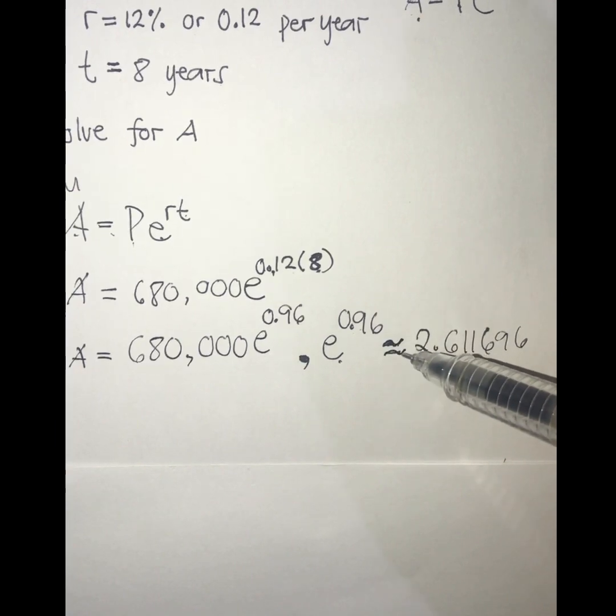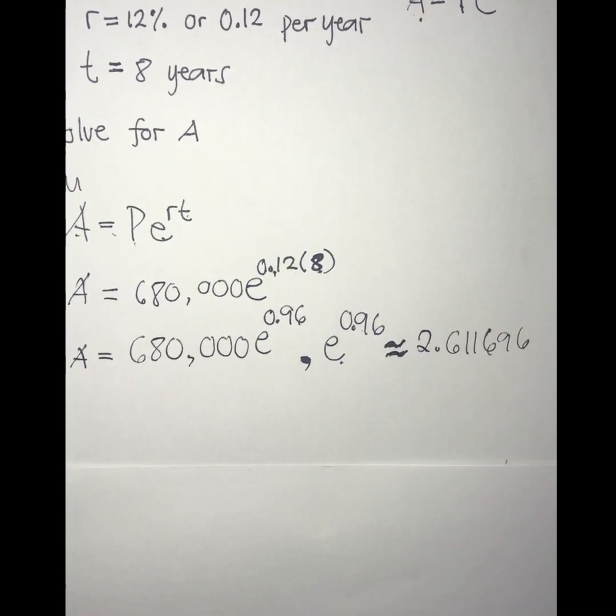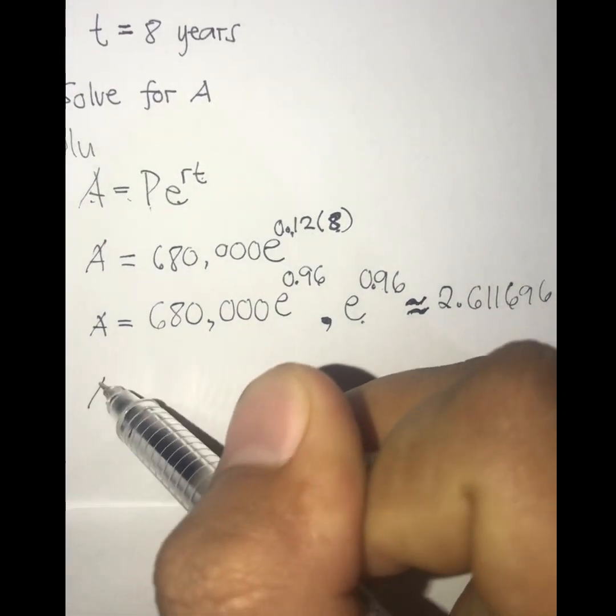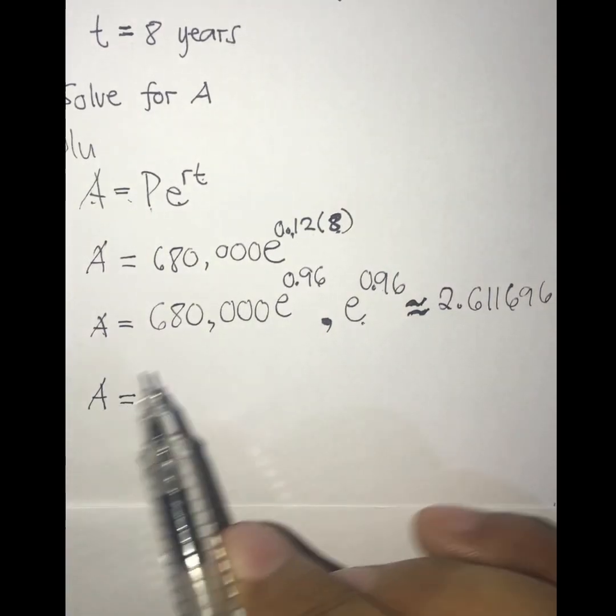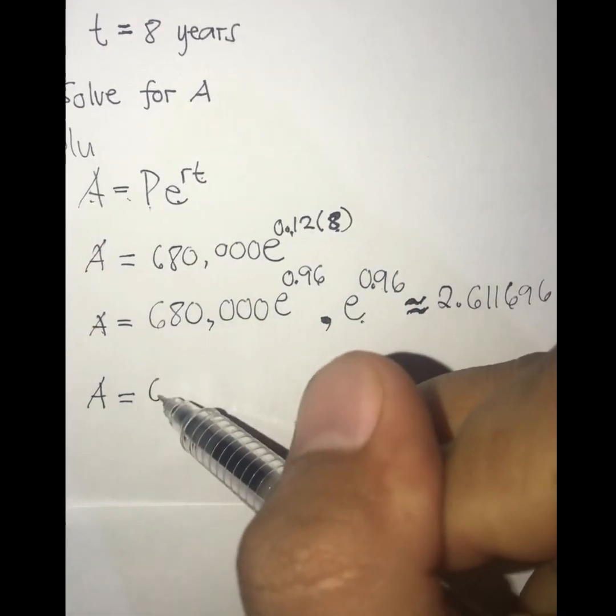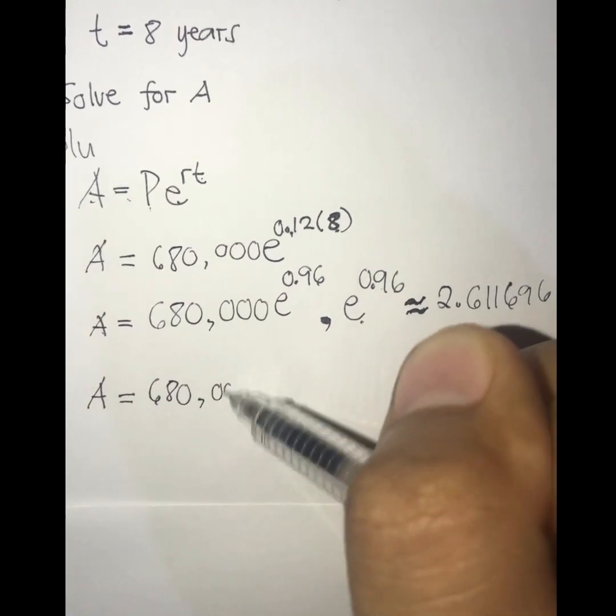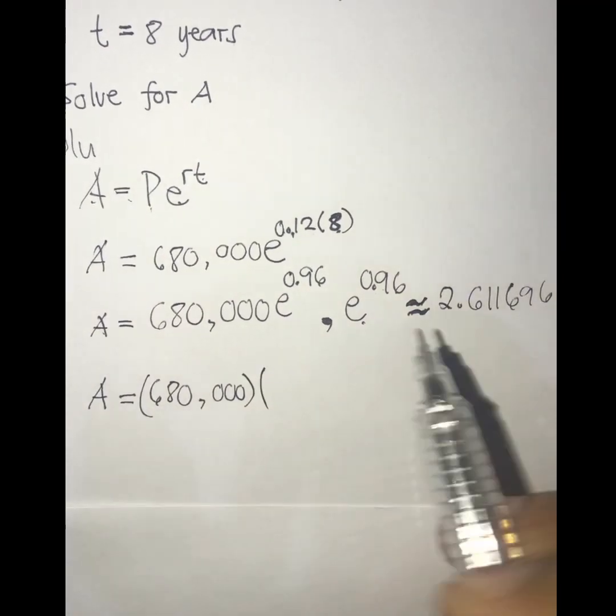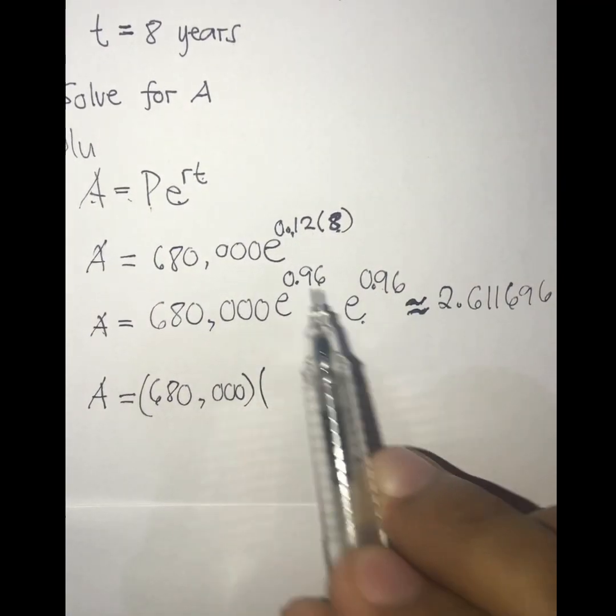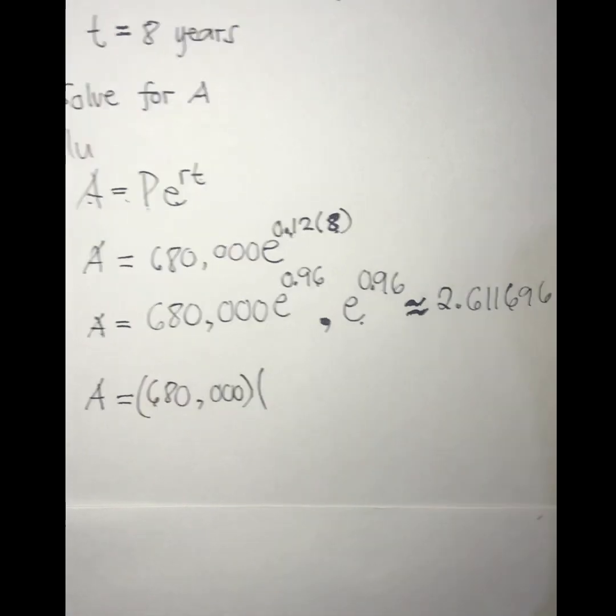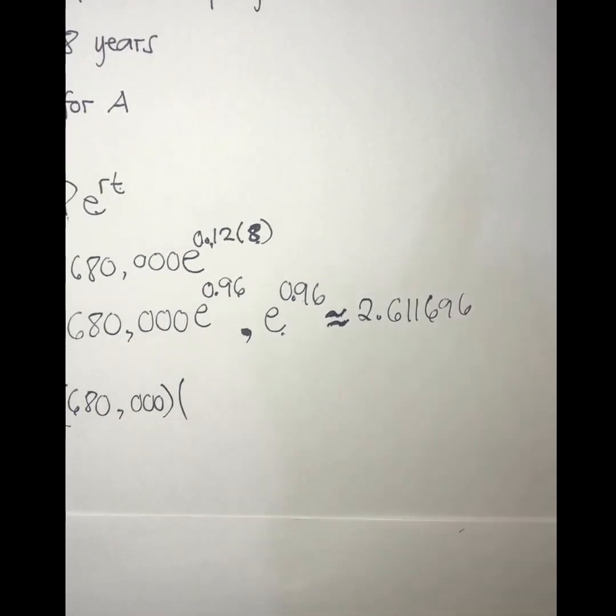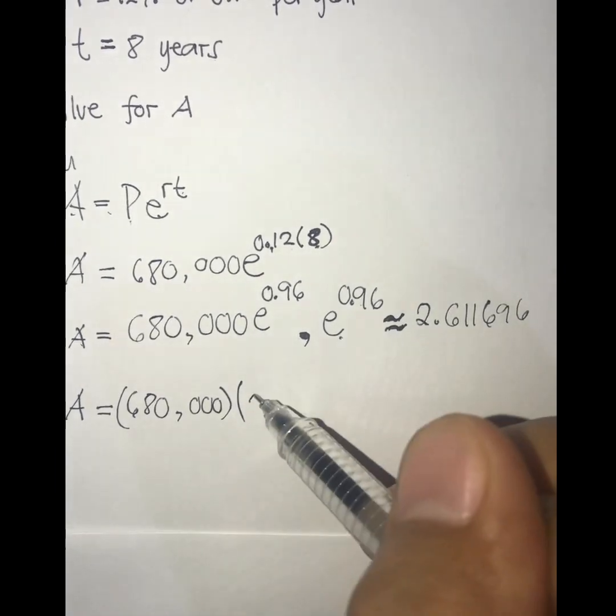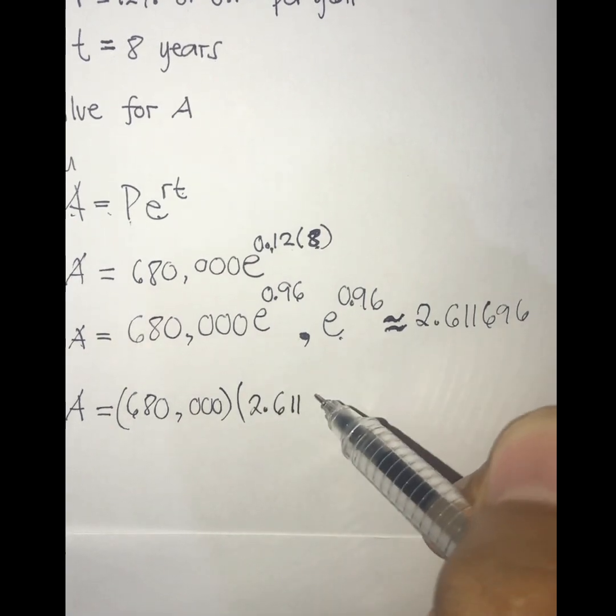Let's use this symbol. So the next process is simply copy A, then copy this one, 680,000. Let's enclose this one, and then you substitute the value of e raised to the power of 0.96, which is 2.611696.